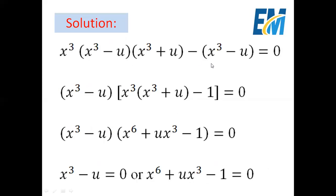Here we can take (x cubed minus u) as a common factor. So we get (x cubed minus u) times [x cubed times (x cubed plus u) minus 1] equals 0, which expands to (x cubed minus u)(x to the power 6 plus u x cubed minus 1) equals 0. Since the product equals 0, either x cubed minus u equals 0, or x to the power 6 plus u x cubed minus 1 equals 0.